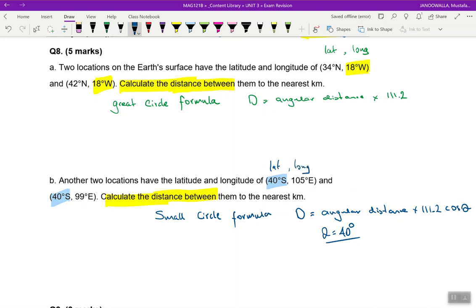So let's start with part a. What I have to calculate is this angular distance. Now I will look at the latitudes and see are they on the same hemisphere. Yep, they're both on the north side. And if they're on the same side you subtract, so same same subtract. So the angular distance in the first one is going to be 42 take 34 and that gives us 8.